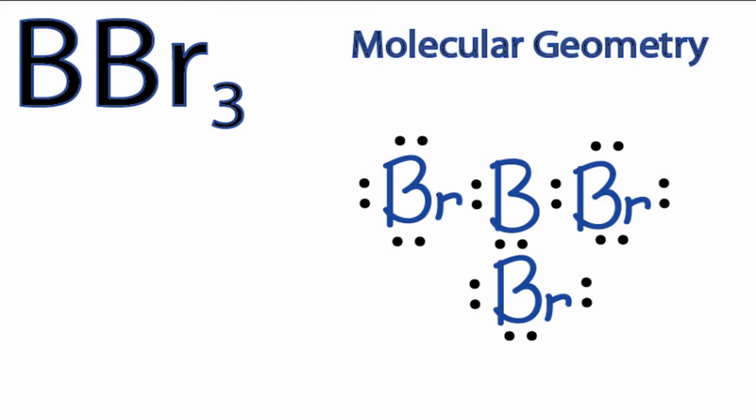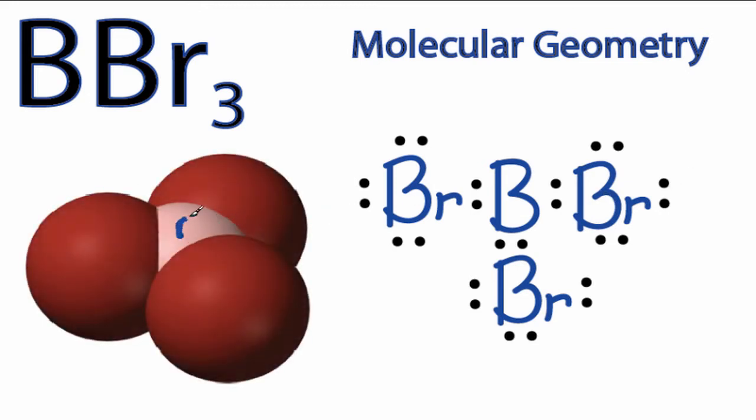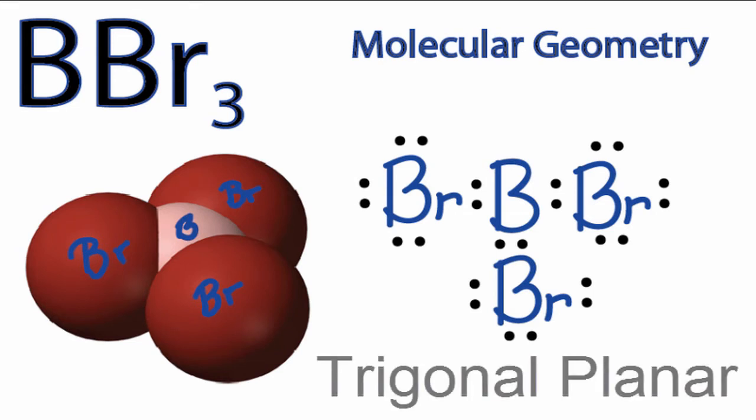It's going to look something like this. We have the boron there in the center, and then the bromines - those are all around it. Because we have three bromines and they're all in the same plane, we call this trigonal planar. So the molecular geometry for BBr3 is trigonal planar.